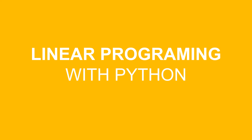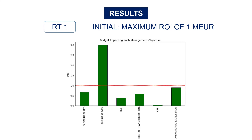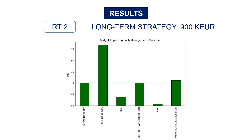You can now put this into equations with Python. You will find the detailed source code and dummy data in the link below. For the initial solution, if we don't consider the management objective, we get 1 million in return on investment and most projects would be allocated to business development and operational excellence — but we don't meet the minimum threshold. Then considering the long-term strategy with management guidelines, we lose 100k in return on investment, but now we have the minimum for digital transformation and sustainability.